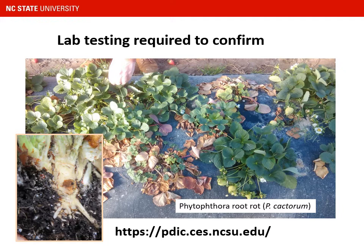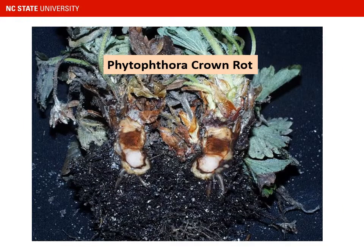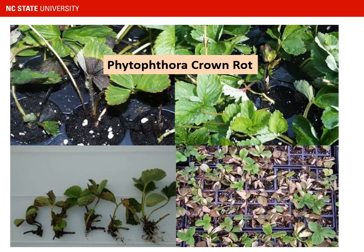The URL for the plant disease and insect clinic is shown on screen — really encourage you to send a sample in, either directly or through your county extension agent. If I cut through a crown with Phytophthora rot, it's usually a brown discolored area that is not marbled like anthracnose, so you can often get a good idea just by cutting crowns open. On plants in trays, you'll tend to have a wetter looking rot on the runners and petioles. Anthracnose by contrast tends to be a drier rot, sometimes with spore masses on the surface; Phytophthora tends to look wetter, more like a damping-off symptom.